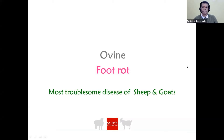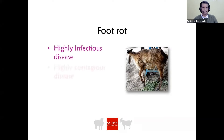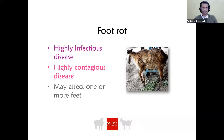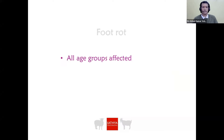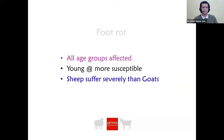Foot rot is the most troublesome disease of sheep and goats. It is a highly infectious and highly contagious disease. It may affect one or more feet. All age groups are affected, including pre-weaning lambs. Young ones are more susceptible compared to adults, and sheep suffer more severely than goats.